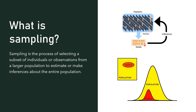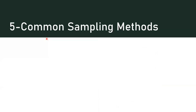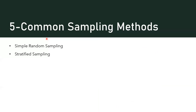The five sampling methods we're going to be talking about today are some of the most common. The first and most important is called simple random sampling. The next one is called stratified sampling. Then we have cluster sampling, systematic sampling, and probably the one you should not do, called convenience sampling.